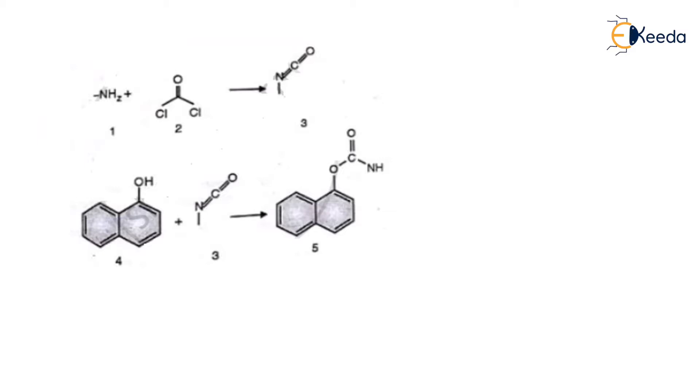Then you have COCl2. It gives you C double bond O, C double bond N and this particular thing again 2 benzene rings attached to each other. Number 4 is nothing but the naphthol. So we have an isocyanate and an OH attached to each other and these both club together to form the carbaryl.